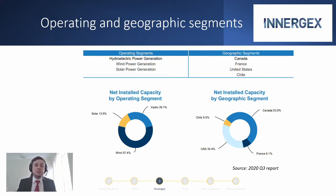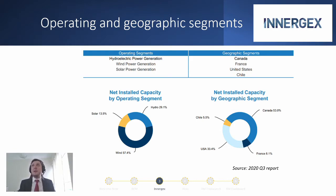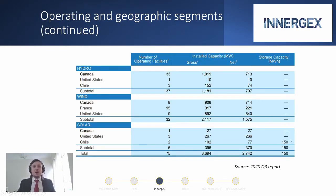The breakdown by region shows that more than half of our facilities are concentrated in Canada and 33% are in the US. France and Chile amount to a very small portion of power generation at the moment, which brings us to the conclusion that our revenue sources are not as diversified as we would like them to be, and at some point this may create risks for us. That was a quick introduction of Energex as a company.